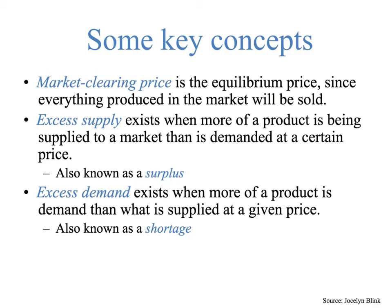The other key term you have to have in your brain before we get into the graphs is excess demand. Excess demand exists when more of a product is in demand than what is supplied at a given price, and this results in a situation called a shortage. So let's take a look at that in terms of a graph.